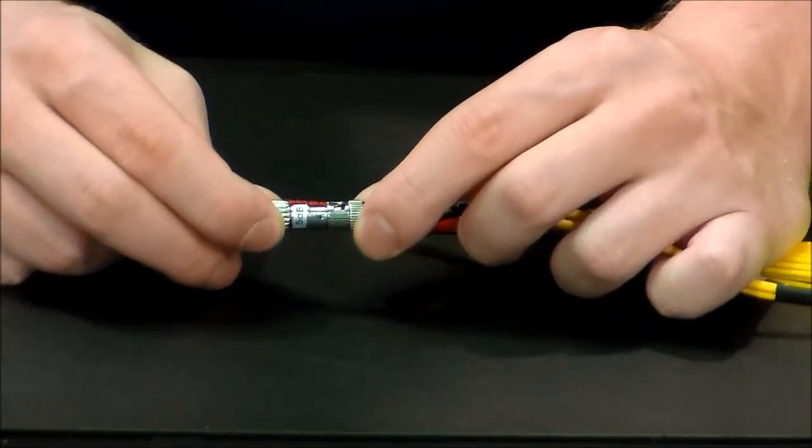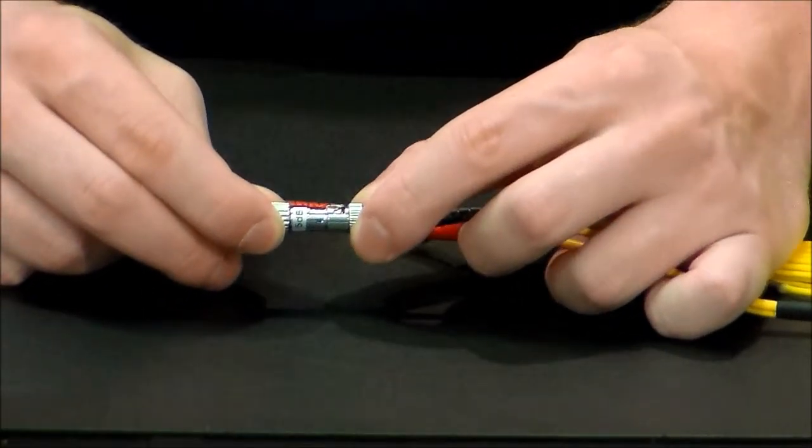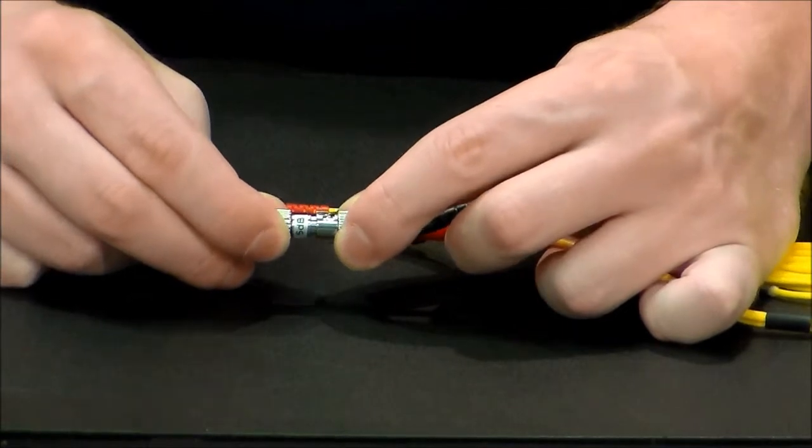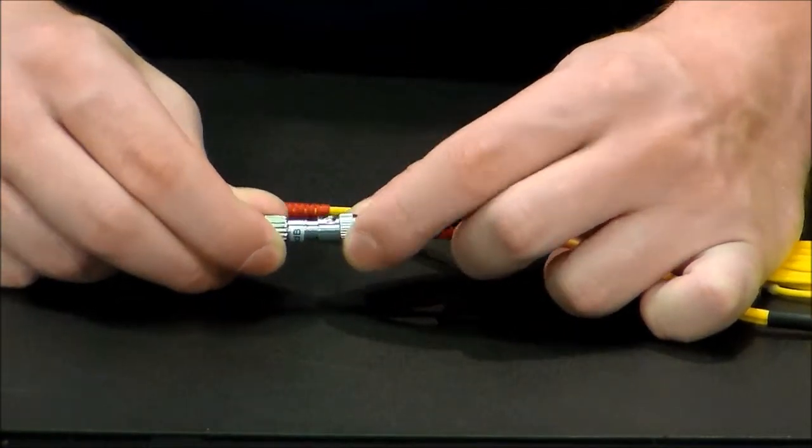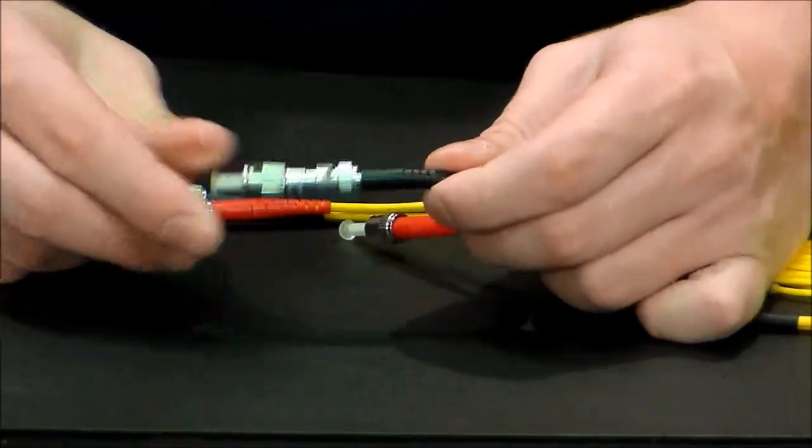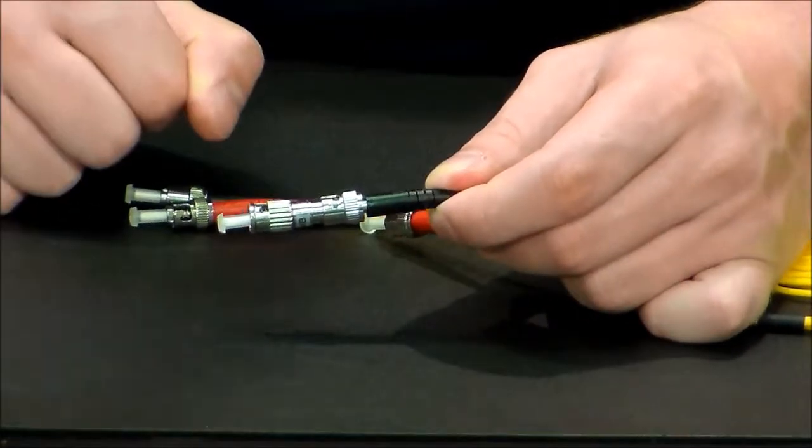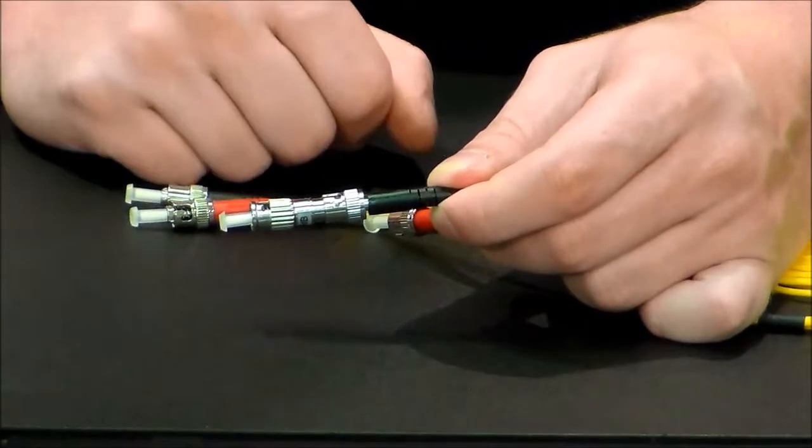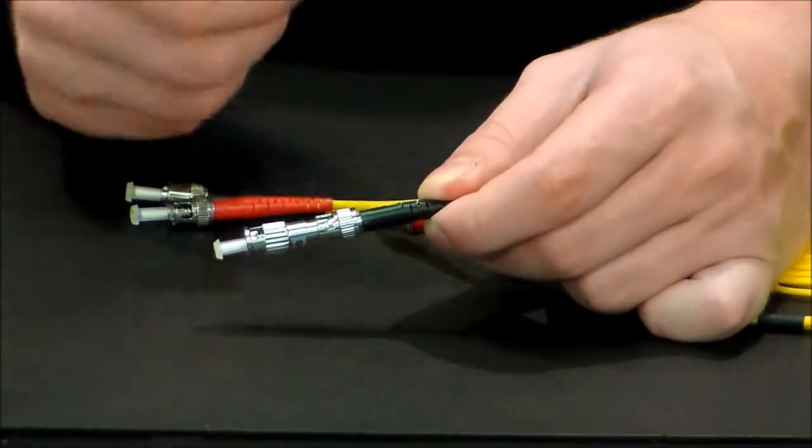And then once they're lined up, it's nice and snug in there, you're going to take the cable and push it and then twist it and then release. And as you can see, the attenuator is there locked in and then you're going to get the attenuation value that you're looking for.